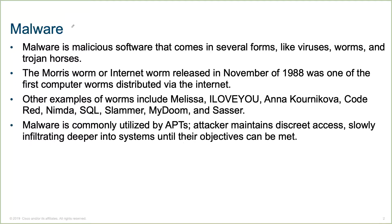The next category is going to be malware, or malicious software — bad software. This software comes in many different forms or styles. As the book is saying here, the viruses, worms, Trojan horses — and they've been around for quite a while. I still remember the Morris worm, sometimes known as the internet worm. I rarely ever heard it called that; I've heard and referenced it most as the Morris worm.